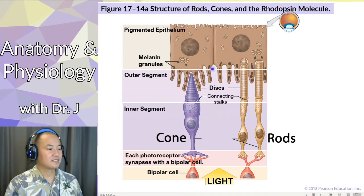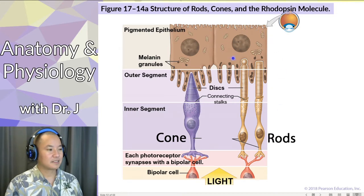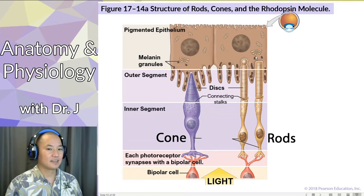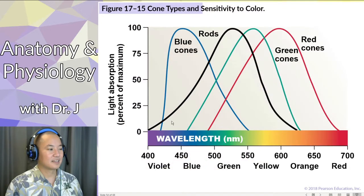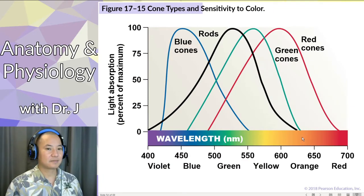Cones detect colored light in three different colors — we'll get to those real soon. Rods detect pretty much the difference between light and dark. They detect light in general within a certain wavelength, so rods tell you whether something is really dark or whether something is very bright.